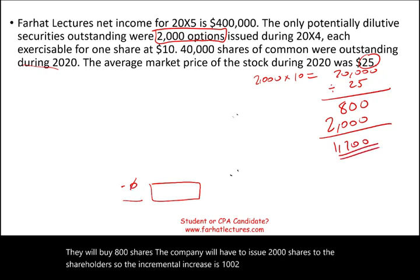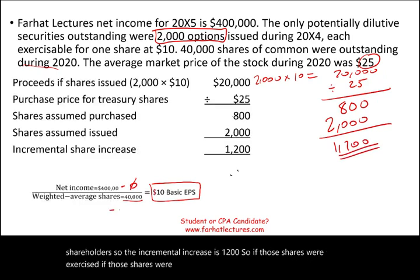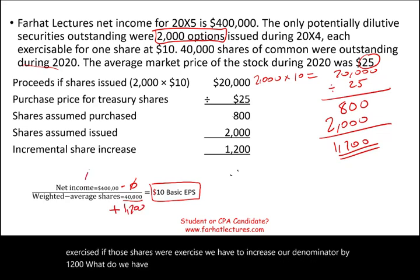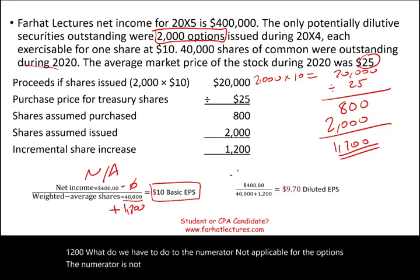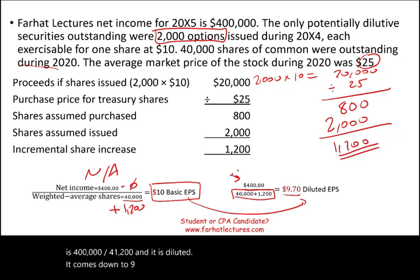The company must issue 2,000 shares to the option holders but repurchases 800, so the net incremental increase in shares is 1,200. For options under the treasury method, the numerator — net income — is not affected. Therefore, diluted EPS is $400,000 divided by 41,200 shares, which equals approximately $9.70. Since this is lower than basic EPS, it is dilutive and must be reported.